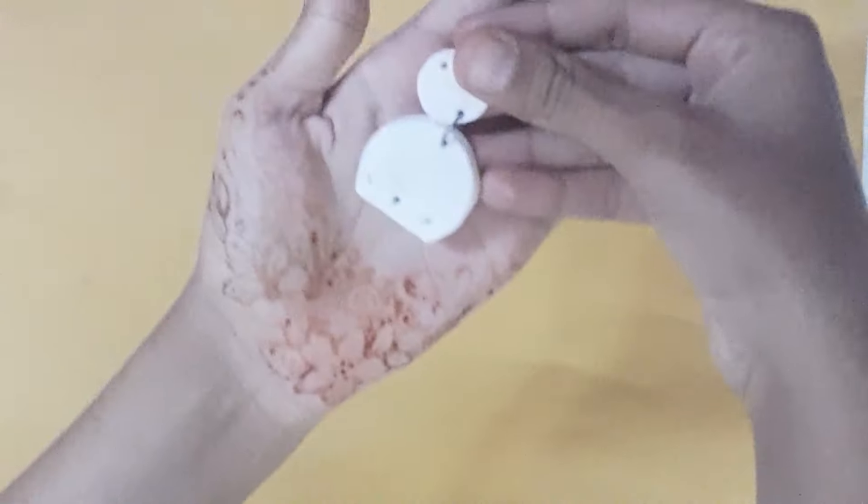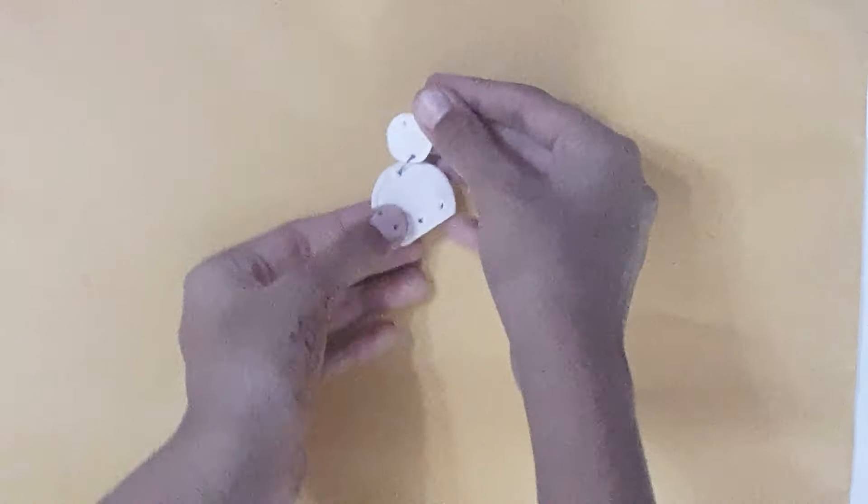So once this is dried properly, we will put a jump ring in between both of the circles.